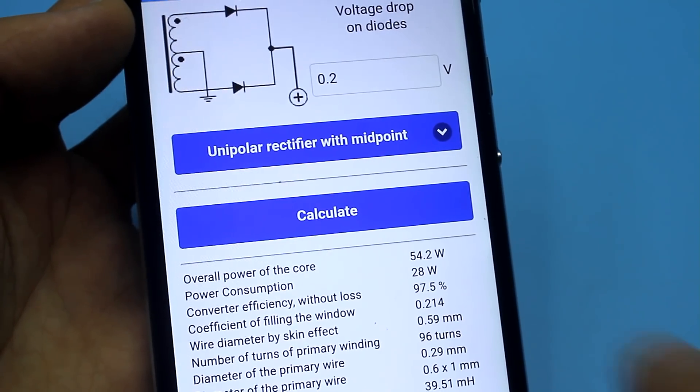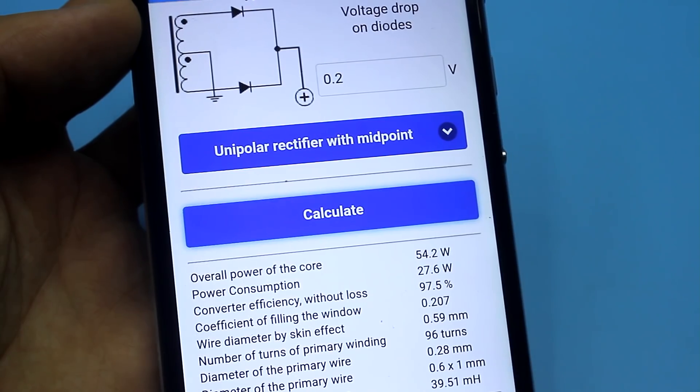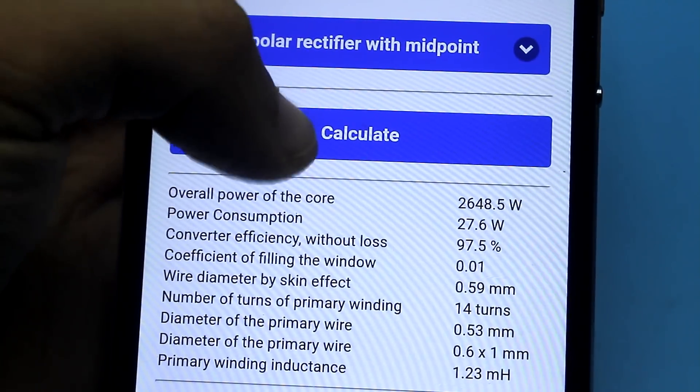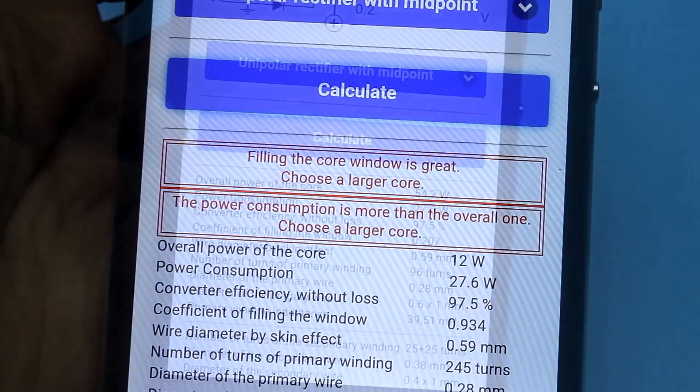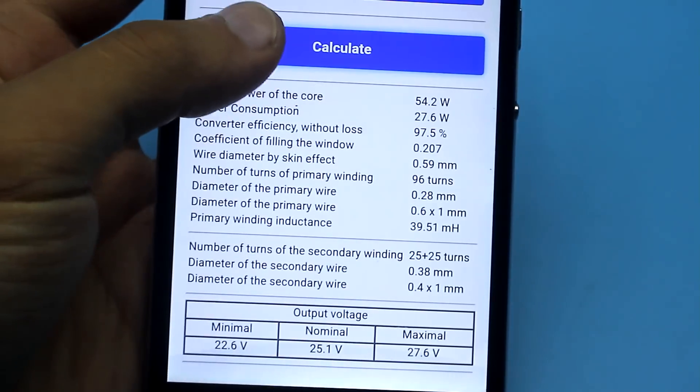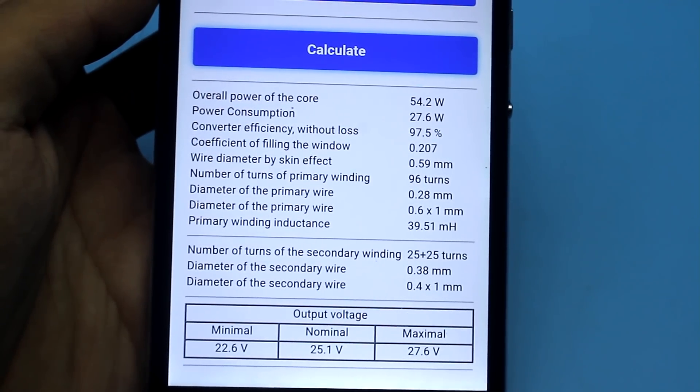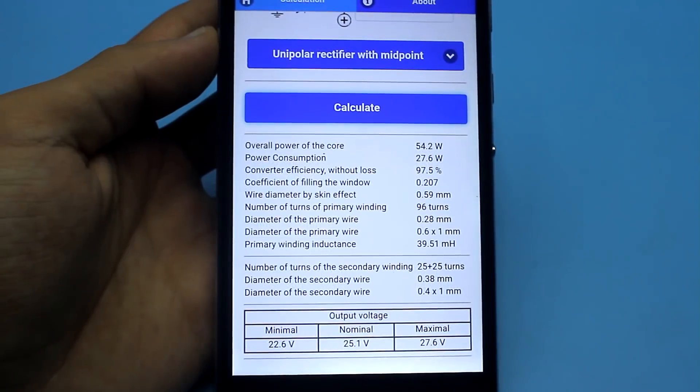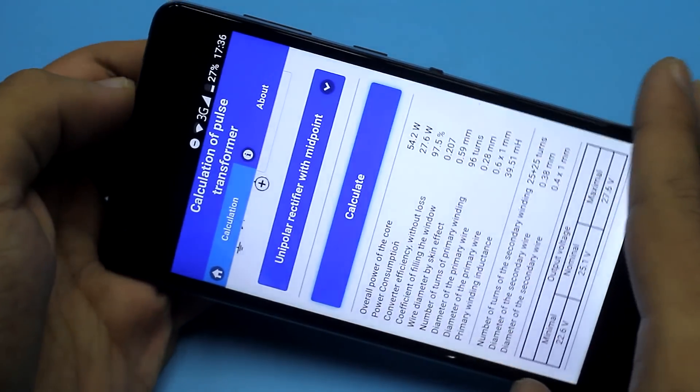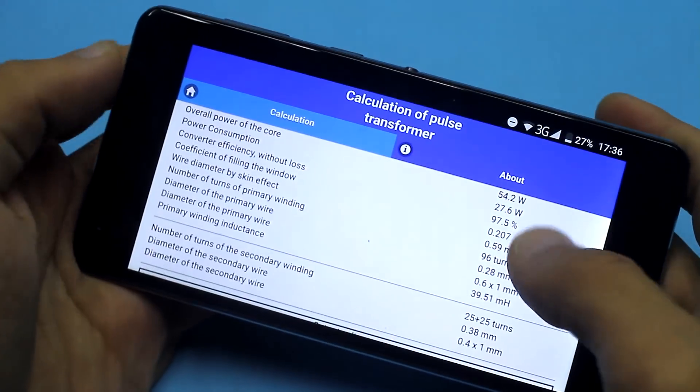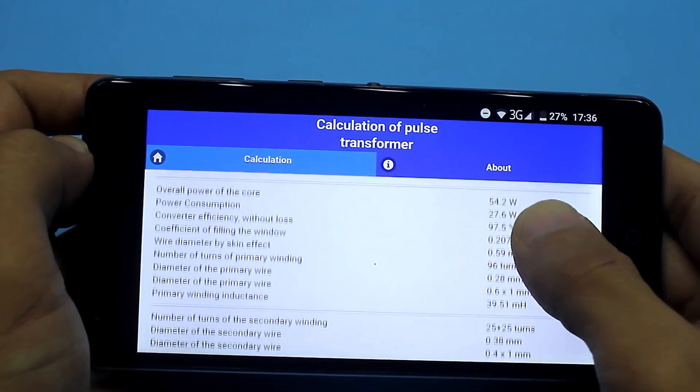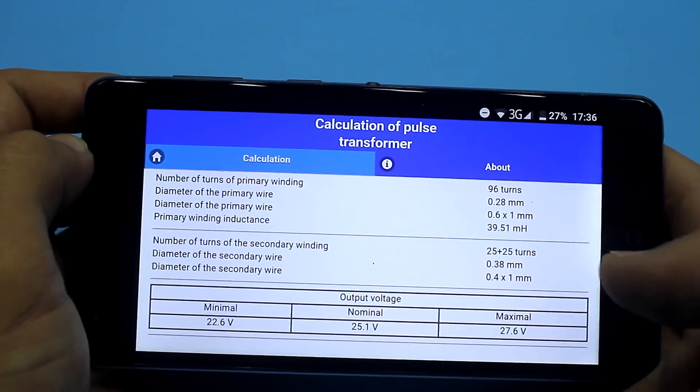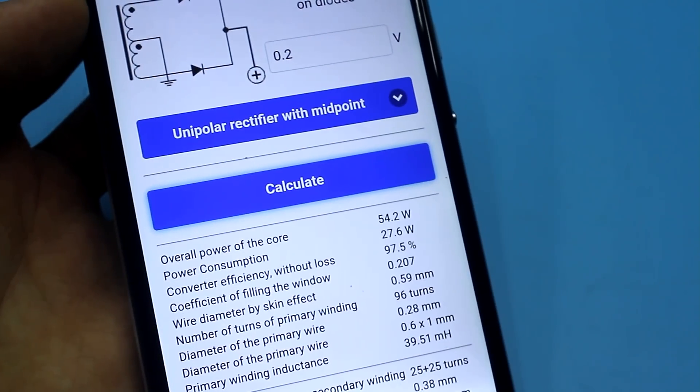Finally, click the button to see the results. If something is wrong, the program will display an error and tell you what to change. Below will be indicated the main parameters that you want to know: the number of turns and the wire diameter of the primary and secondary winding, the minimum, nominal and maximum voltage on the secondary winding, core overall power, the power consumed by the load, the efficiency of the inverter, and much more.